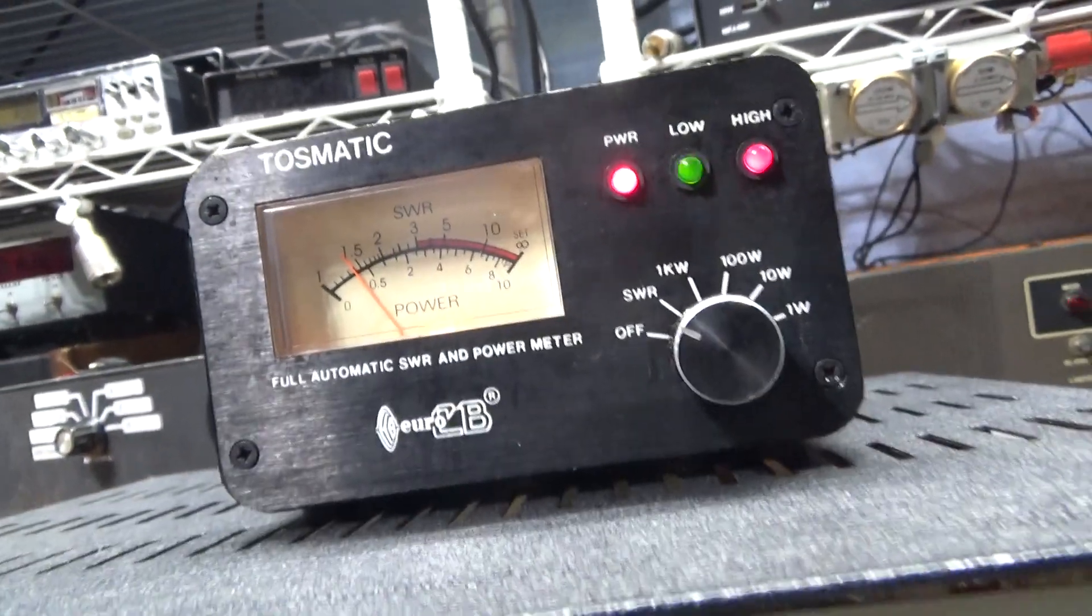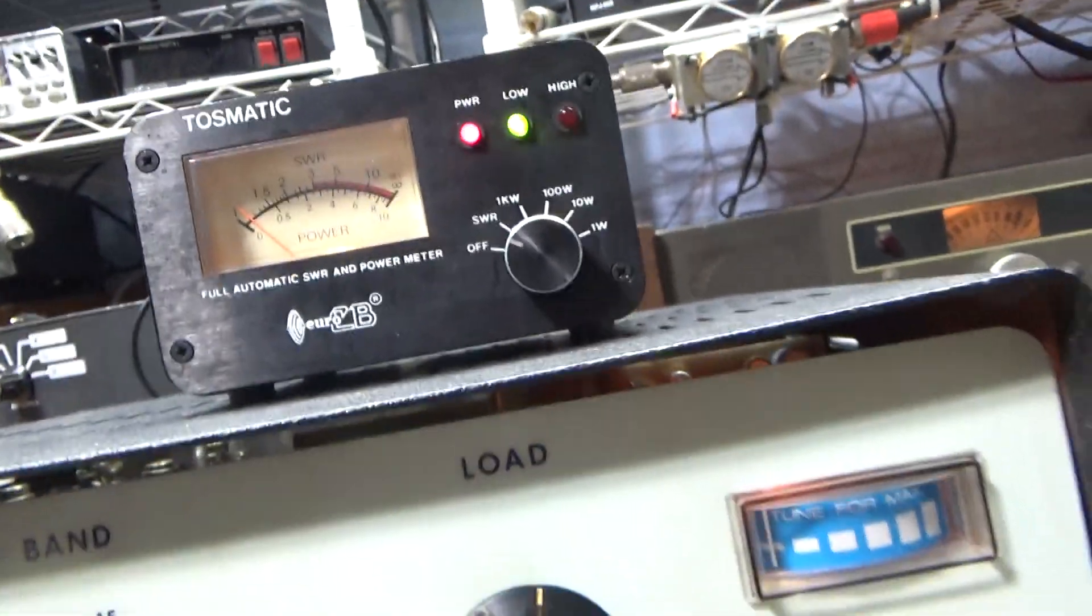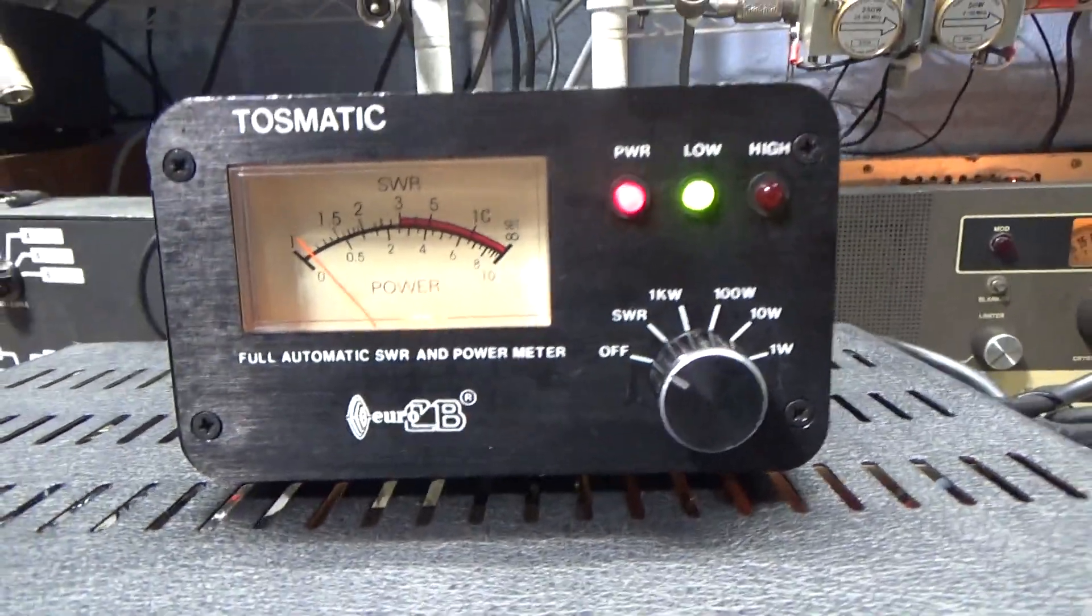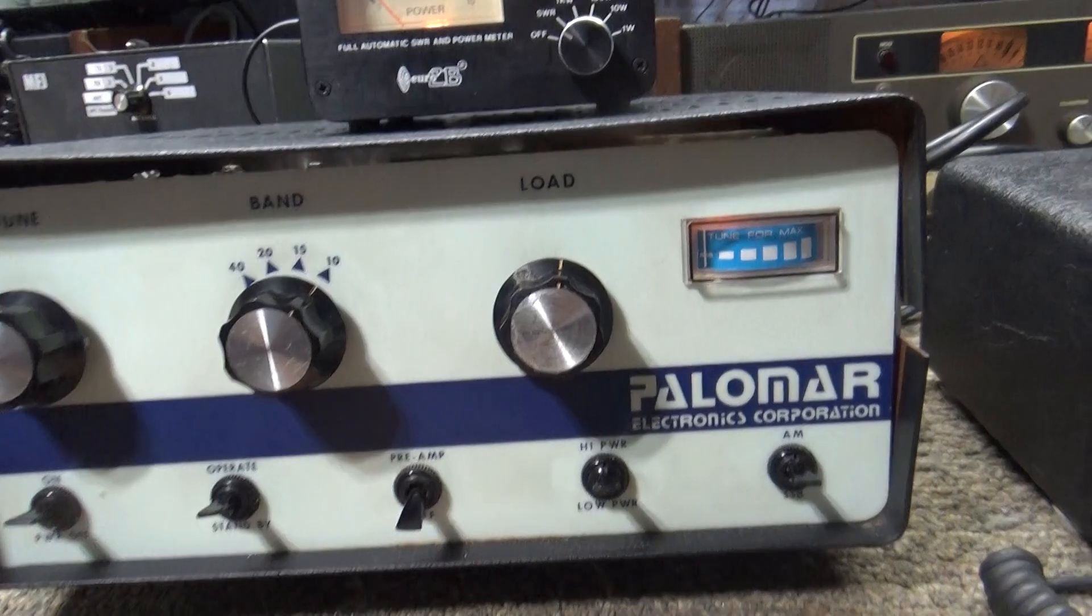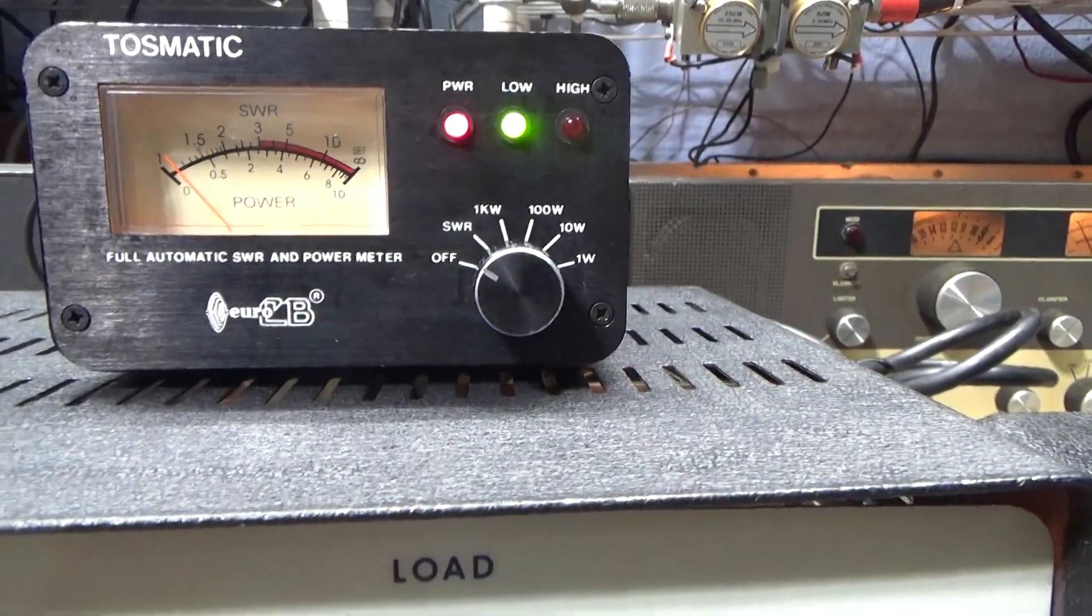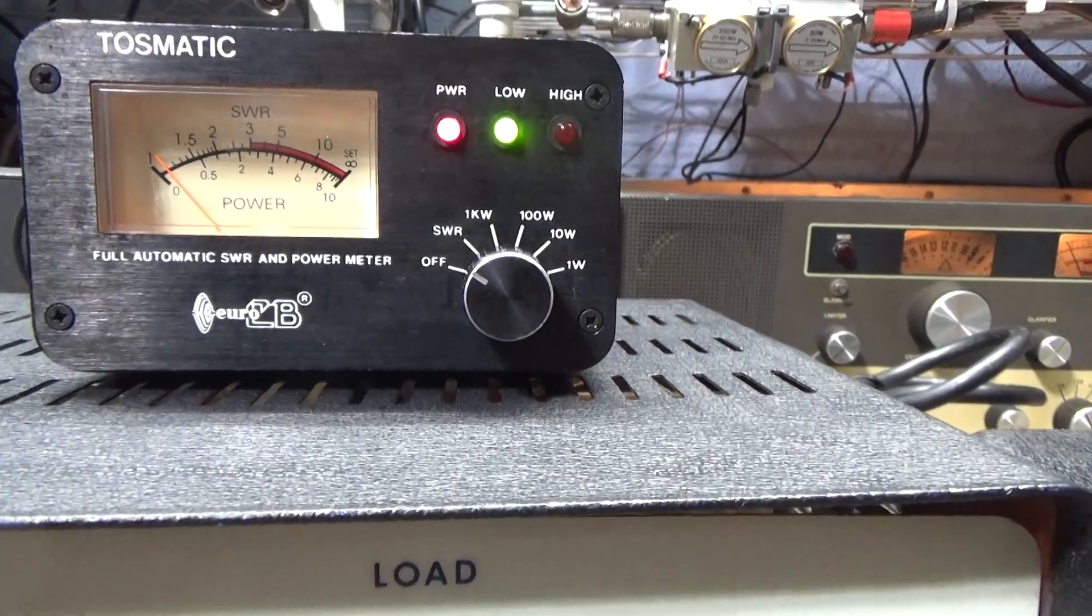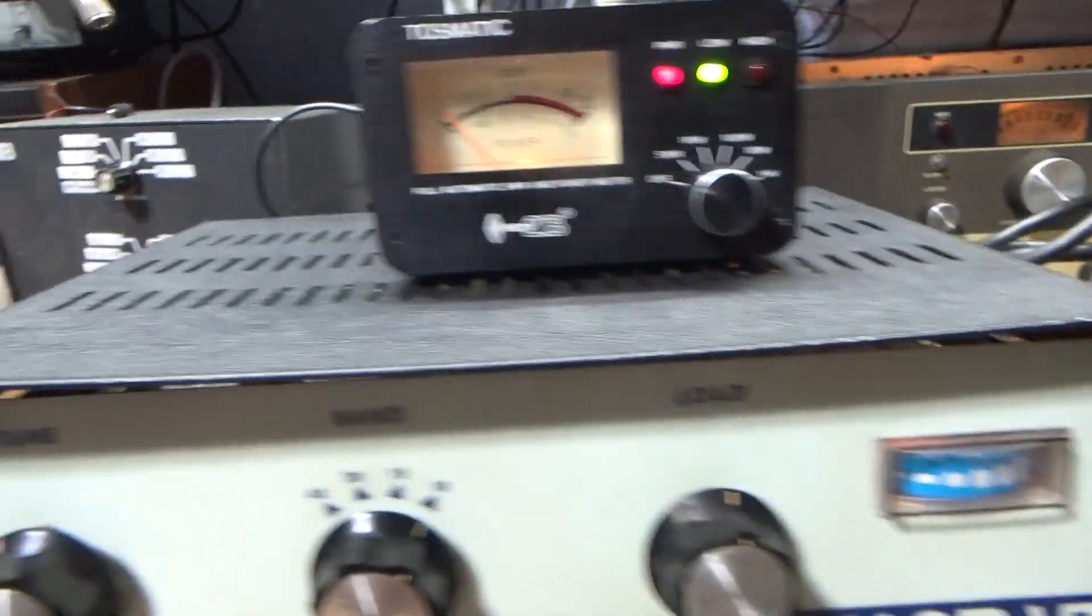So anyway, we do like the automatic SWR. It's got all the scales and everything on the Tosmatic. It works, but if you like to see swing or a lot of watts, this ain't your meter. But if you like the automatic SWR, which I do, this is your meter.